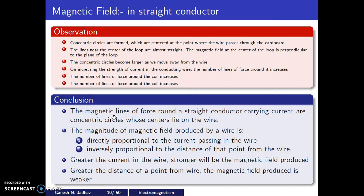The conclusion is: magnetic lines of force around a straight conductor carrying current are concentric circles whose center lies on the wire. The magnitude of magnetic field is directly proportional to the current passing through the wire, and inversely proportional to the distance of the point from the wire. Greater the current in the wire, stronger the magnetic field. Greater the distance from the wire, the weaker the magnetic field.